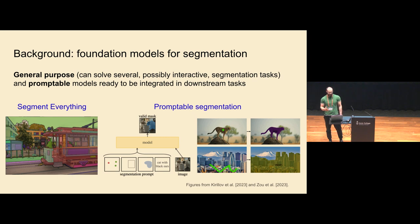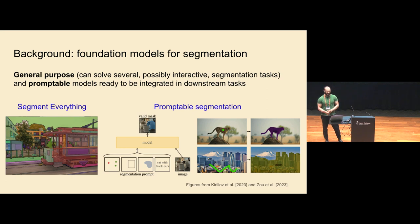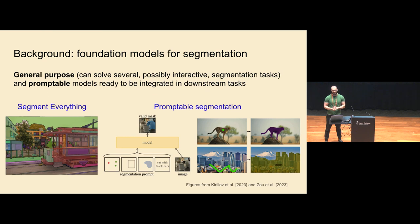In general, we want to change the predicted mask for the same object. A few years ago, for each task and each dataset we were training specific models. Now we are moving toward foundation models, and there are several foundation models for segmentation appearing. In this work, we want to test the robustness of these models against adversarial attacks, and especially how easy and how cheap it is to produce these adversarial attacks.